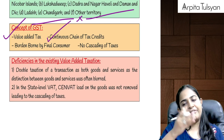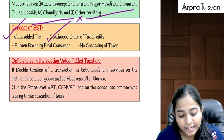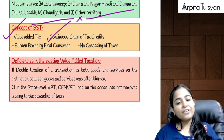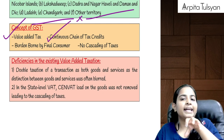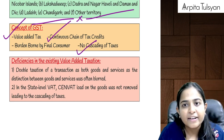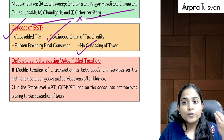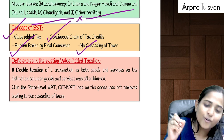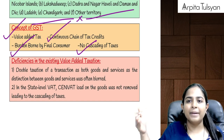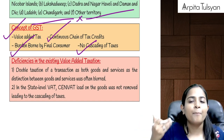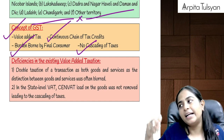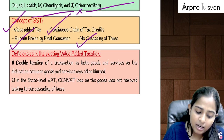In GST, there is a continuous chain of tax credits. Whatever tax we have paid at the time of our purchases, we will get the input tax credit of the same. Because of that, there is no cascading effect of taxes. The final burden goes on the consumer. All the middlemen will keep on getting the tax credits and are not going to pay the tax from their pocket. Ultimately, they are going to recover it from the consumer.